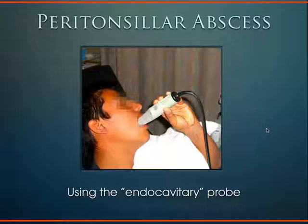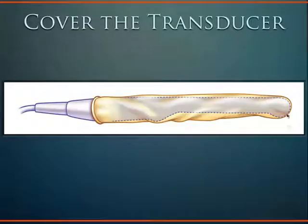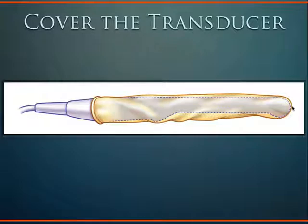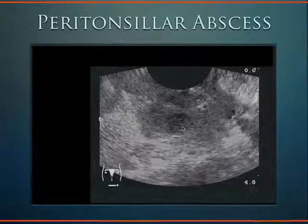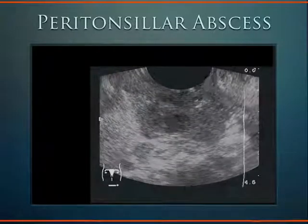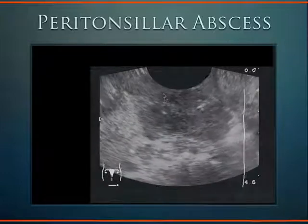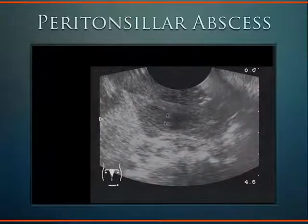Keep the transducer as clean as possible using a sheath, with gel between the probe and the sheath. You can spray the back of the patient's throat with an analgesic spray like benzocaine or hurricane spray, and a little versed to calm the patient's nerves. The tonsillar abscess looks like this — the endocavitary probe's footprint is back here, and the needle was guided directly into the abscess. This hypoechoic area here is the abscess.